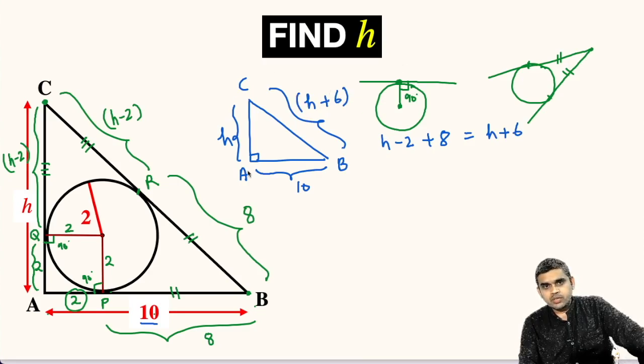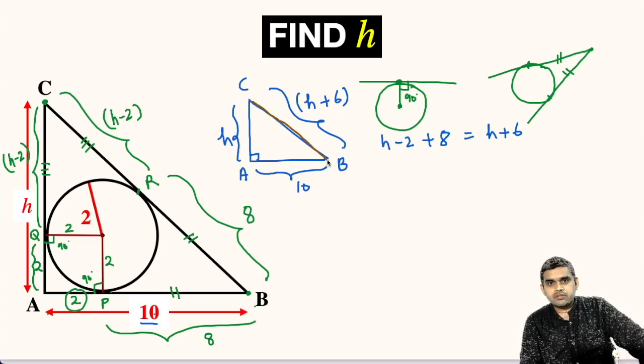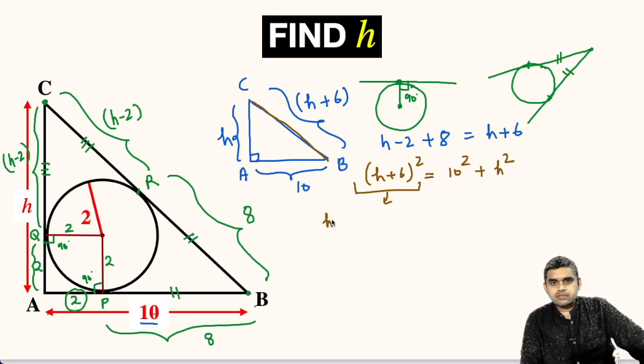Now, we will apply the Pythagorean theorem in this triangle ABC. We will get BC, that means hypotenuse squared. So I am writing (h + 6)² equals AB², that means 10² plus AC², that is h². Let us expand this bracket. This will be h² + 12h + 36 equals 100 + h².